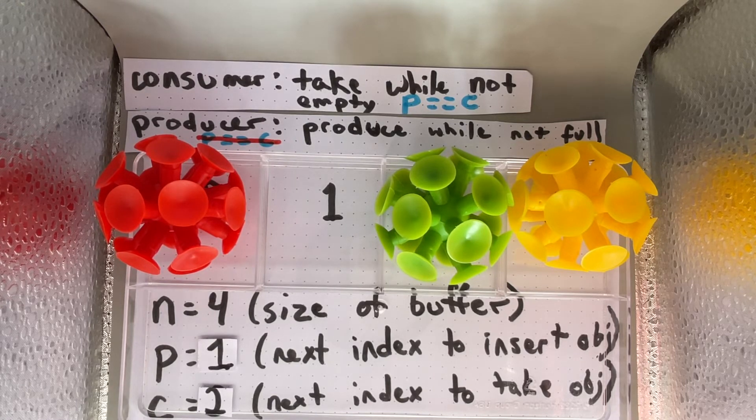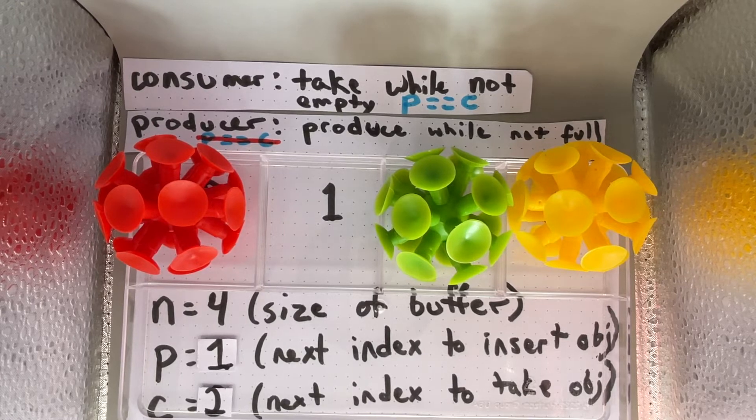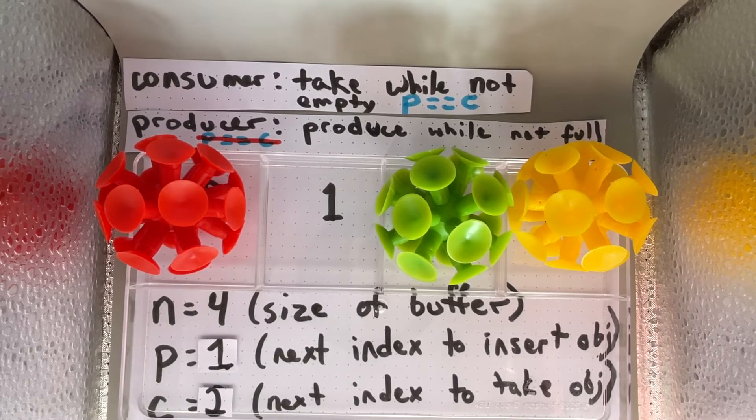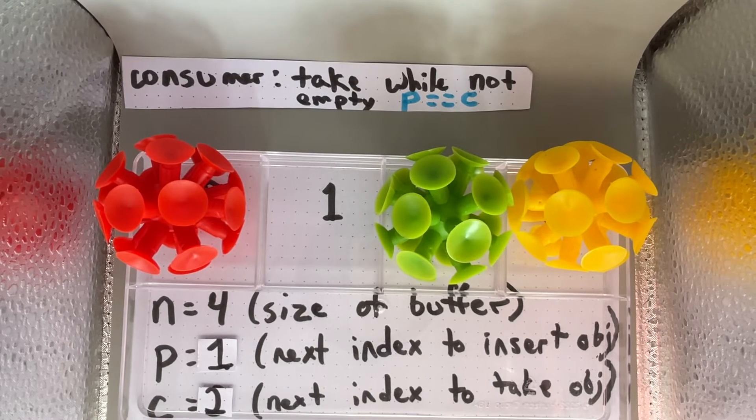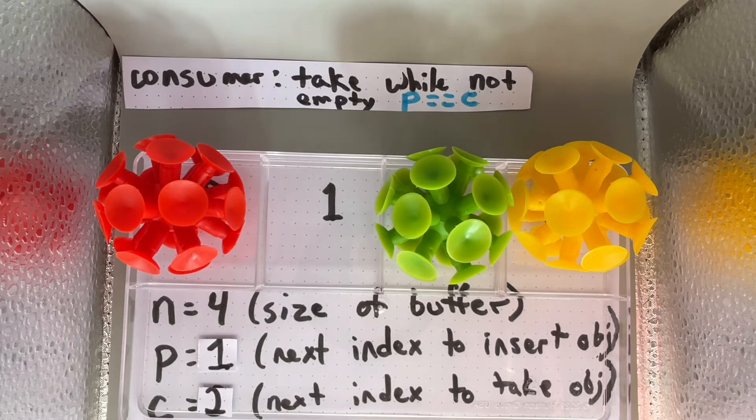In this case, p equals 1, c equals 2, and the producer is one behind the consumer. Maybe we can say that the producer plus one is equal to c, and we consider that to be our definition for full.